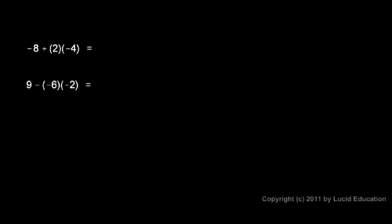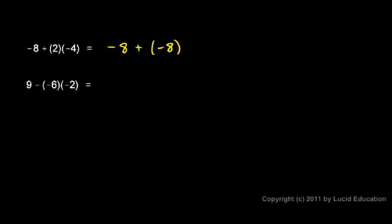In this example, negative 8 plus 2 times negative 4. We do the 2 times negative 4 first, because multiplication comes before addition and subtraction. So I'll rewrite this: negative 8 plus... when I get to this part I'll do the multiplication. 2 times negative 4 is negative 8. So I have negative 8 plus negative 8, and that gives me negative 16 for my answer.